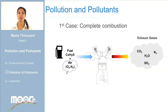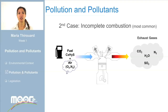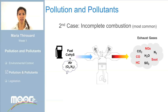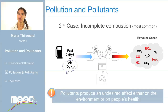However, complete combustion is very rare. When combustion is not complete, in addition to CO2, nitrogen and water, other products and gases are produced. The main ones — those which are produced in the highest concentration — are carbon monoxide (CO), unburned hydrocarbons (HC), nitrogen oxides (NOx), and particulate emissions. Of course, there are many others, but let's keep it simple. These products are classified as pollutants because they produce a non-desired effect either on the environment or on people's health.